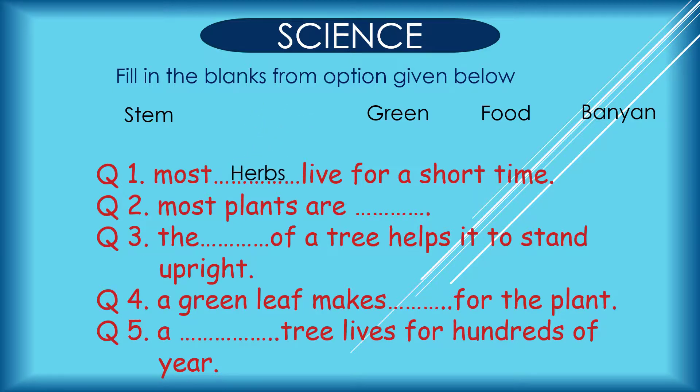Most herbs live for a short time. Most plants are green. The stem of a tree helps it to stand upright. A green leaf makes food for the plant. A banyan tree lives for hundreds of years.